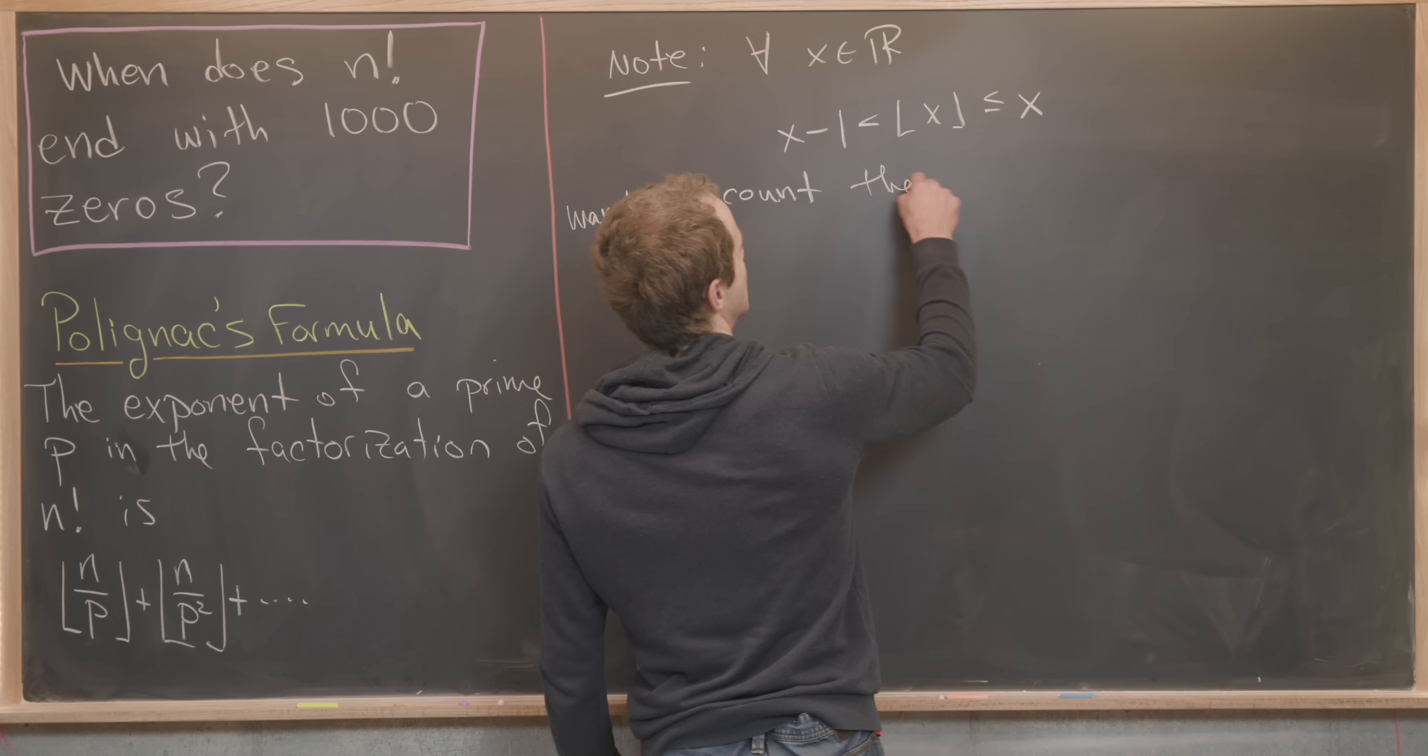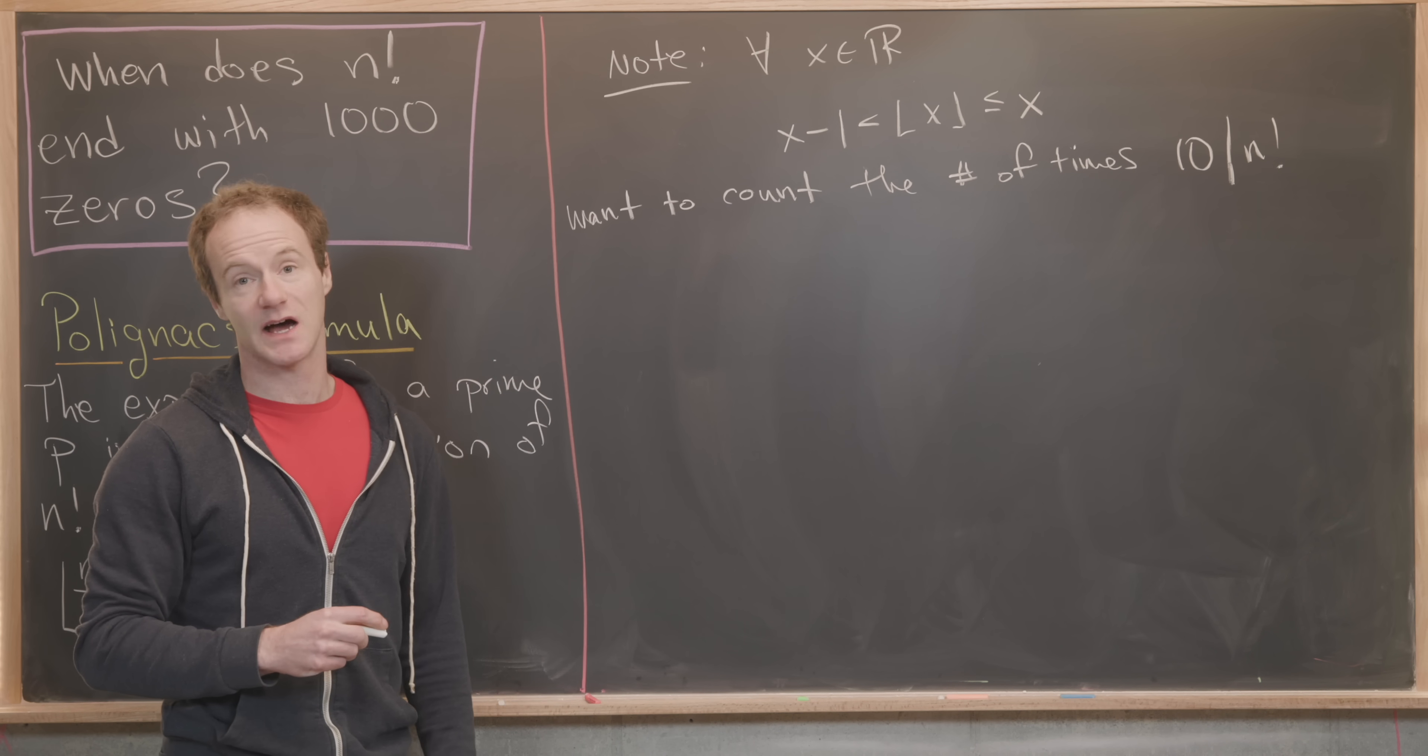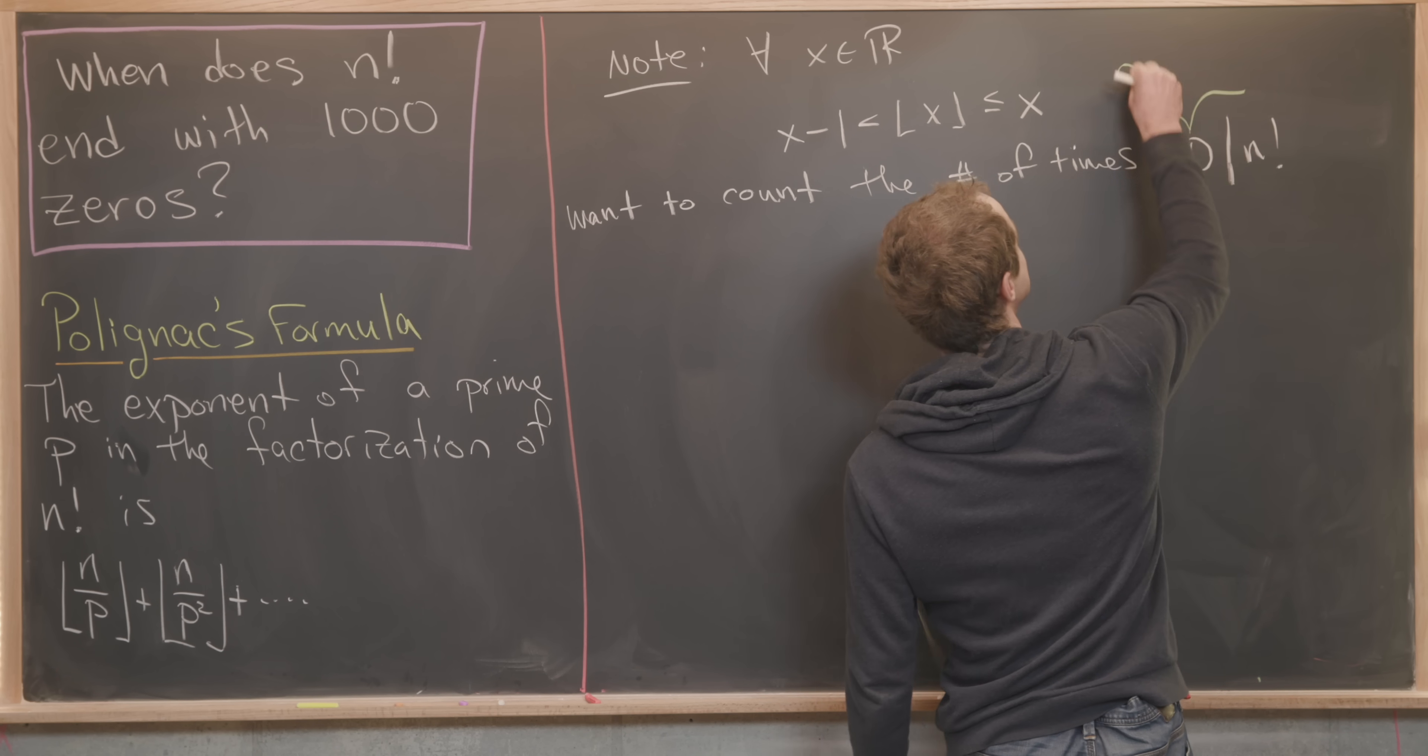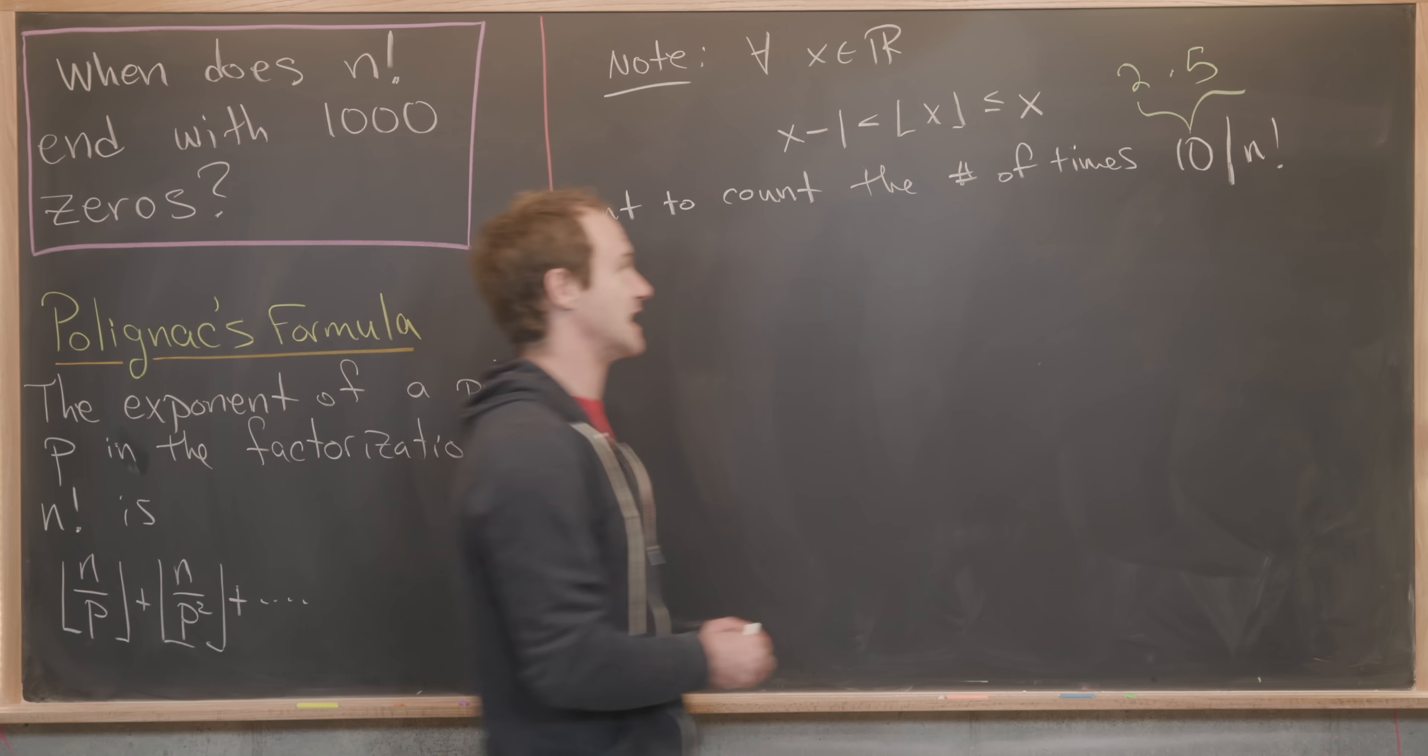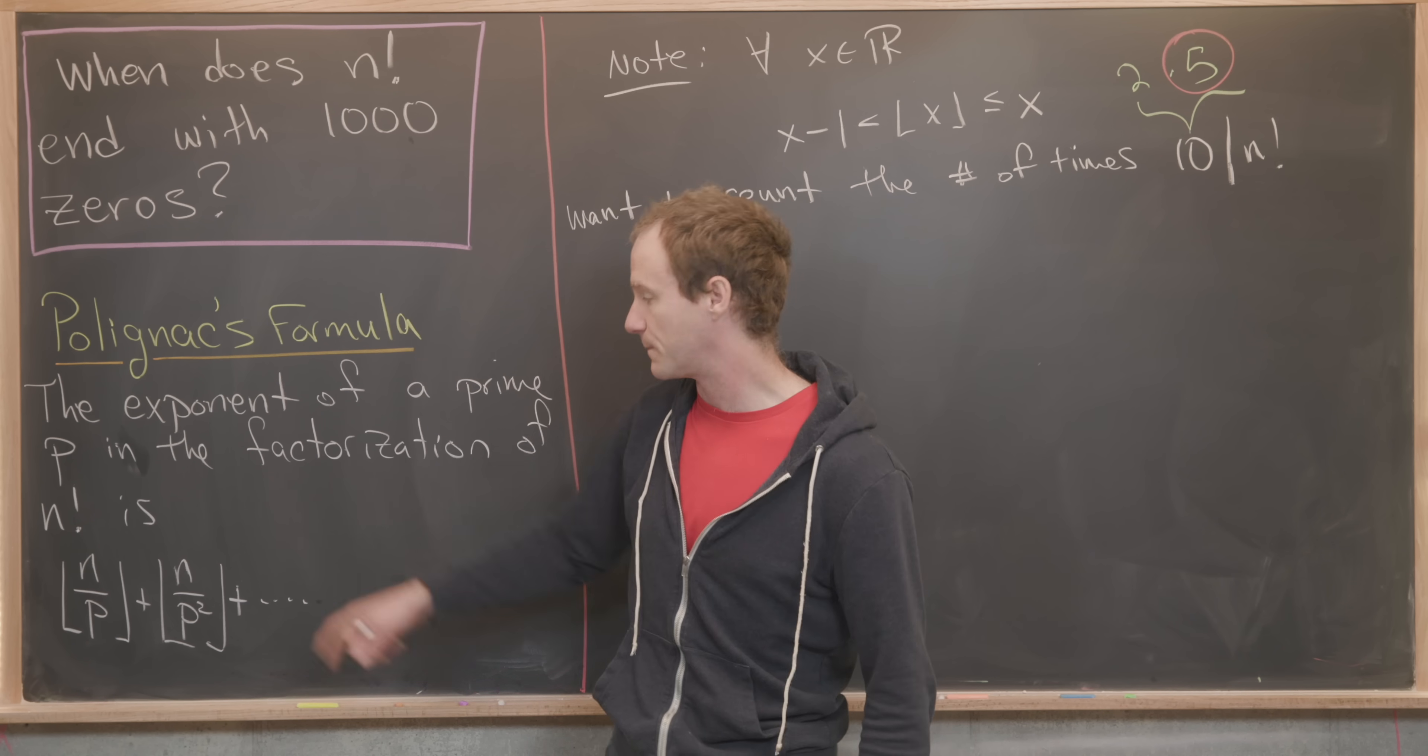We really want to count the number of times 10 divides n factorial. But the problem with that is that 10 is not a prime. So we can think about the prime factorization of 10, which is obviously two times five. And since five is larger than two, what we really want to aim for is the number of times that five divides into n factorial.